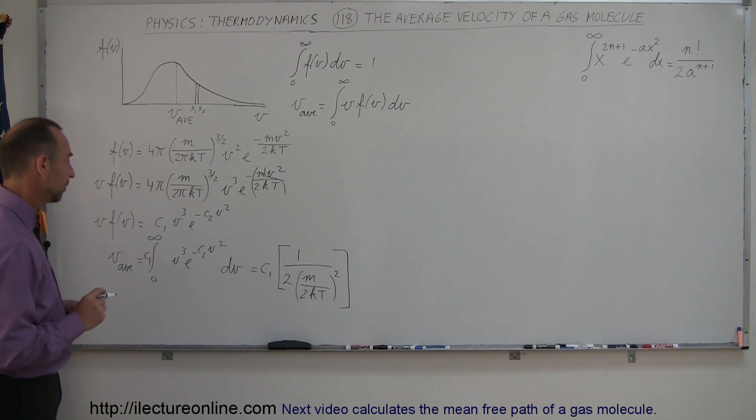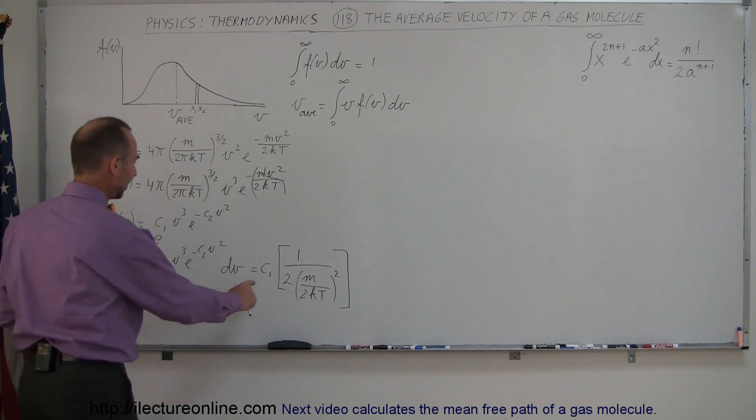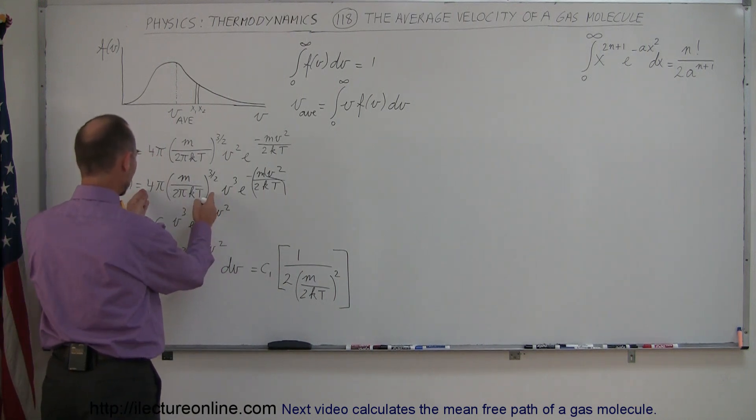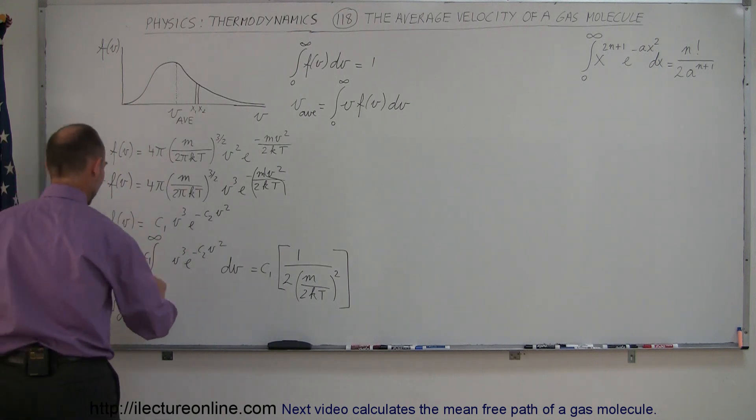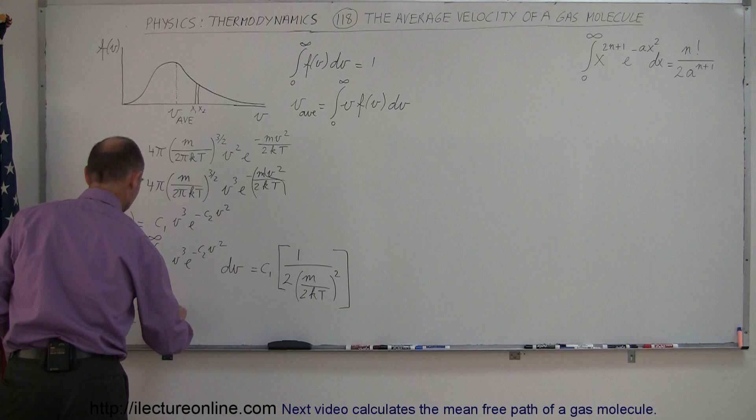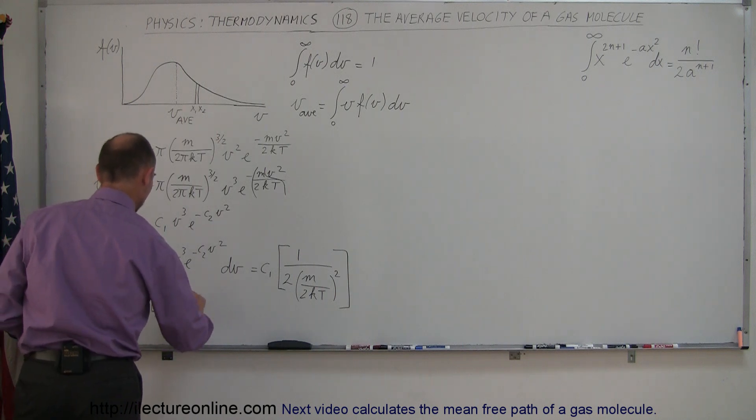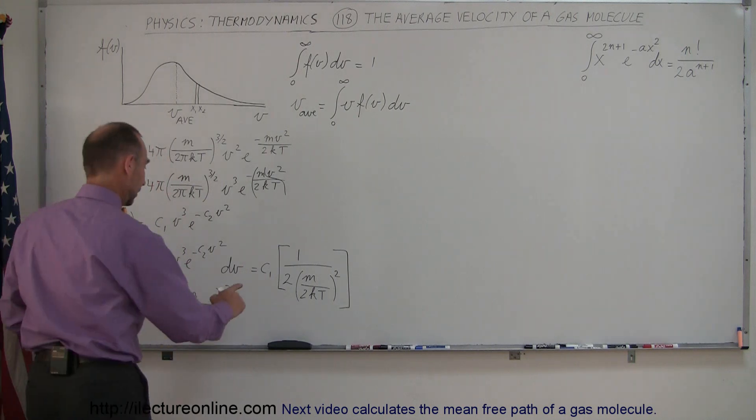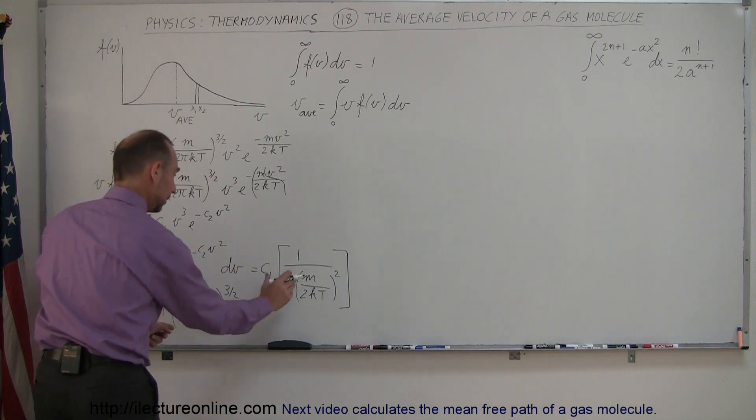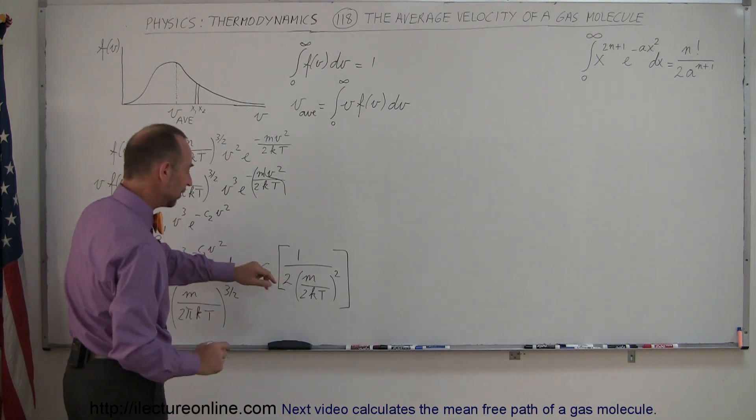Okay, so now I simply have to simplify that, work that out. I still have my C1 here, which is this quantity right here, so let me write that down. So V average is equal to C1, which is 4π times M divided by 2πKT to the 3 halves power, that's my C1 right here, times 1 over this squared.